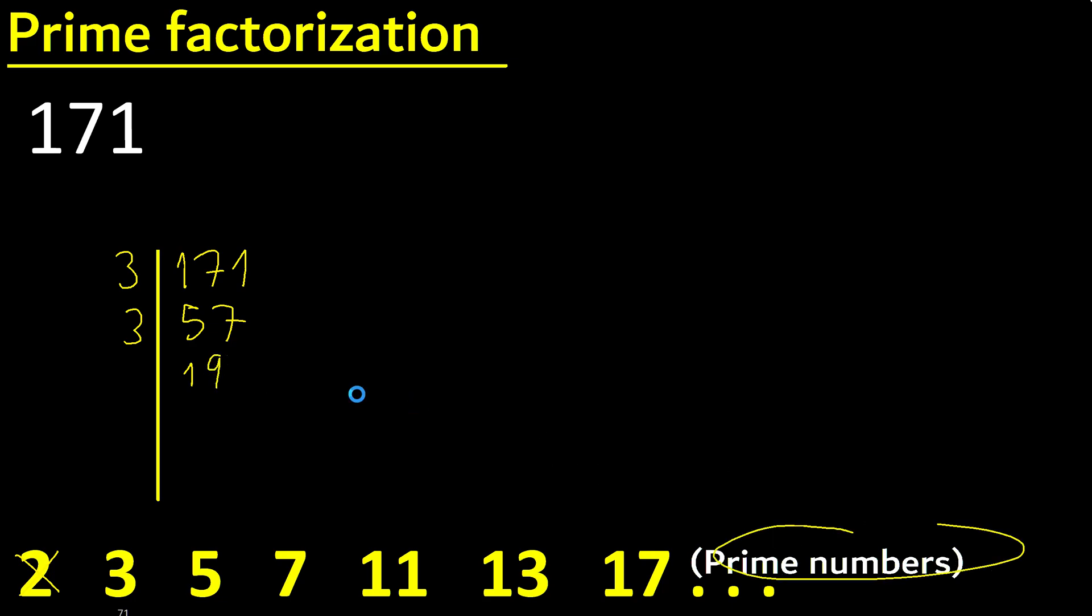19 is a prime number, therefore divided by the same number. 19 divided by 19 is 1.